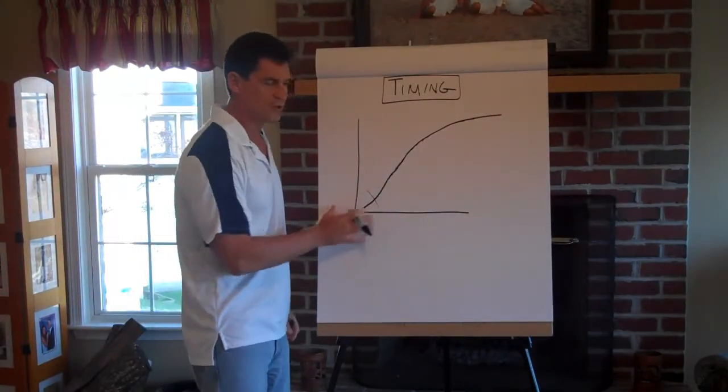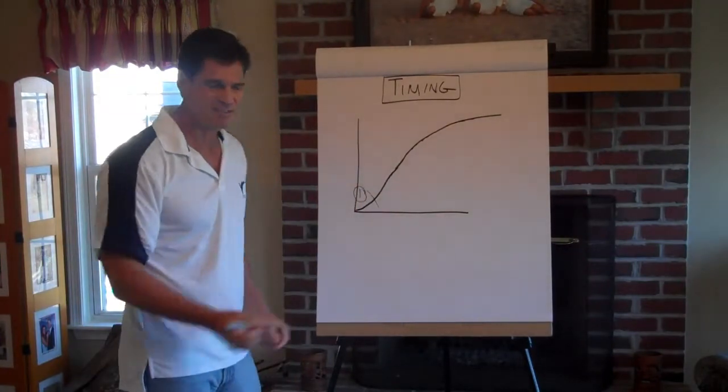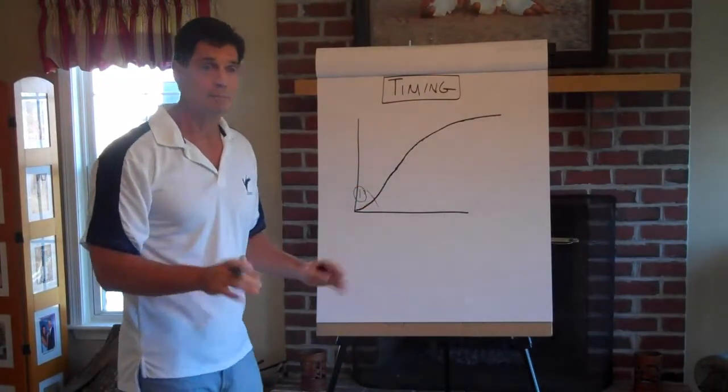This part of the curve represents what's called the pioneering phase. This is kind of phase one in an industry, right? It takes a long time to pioneer ideas so that they are proven to have some level of credibility.